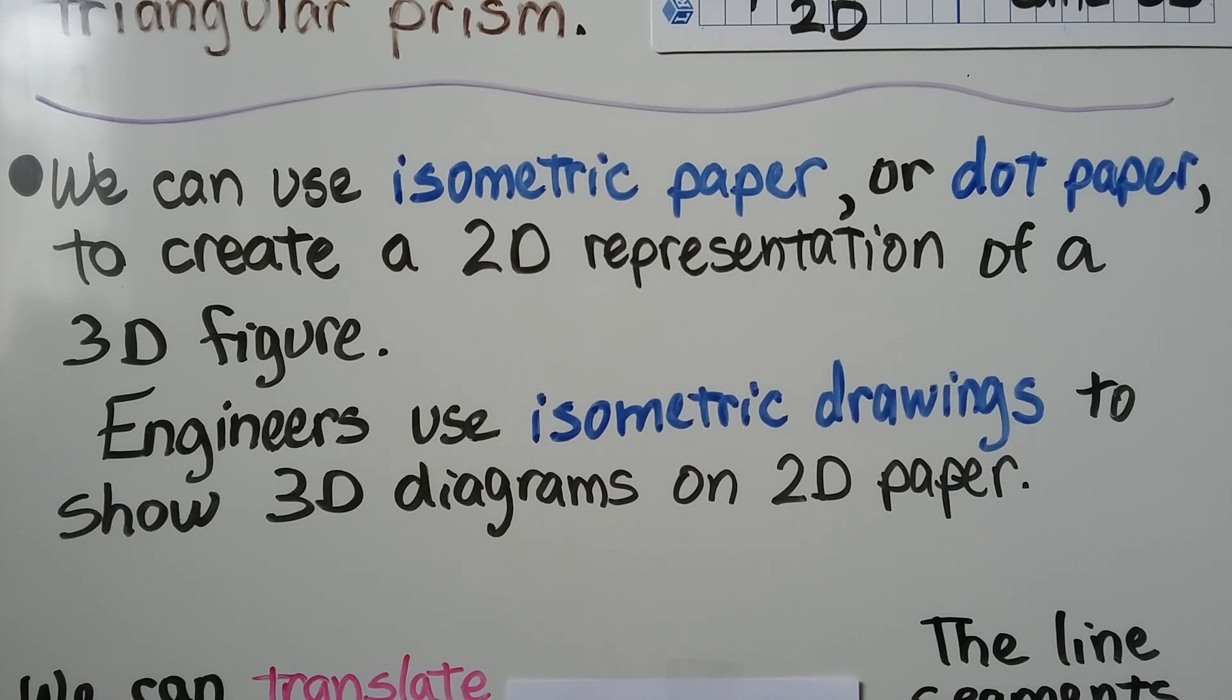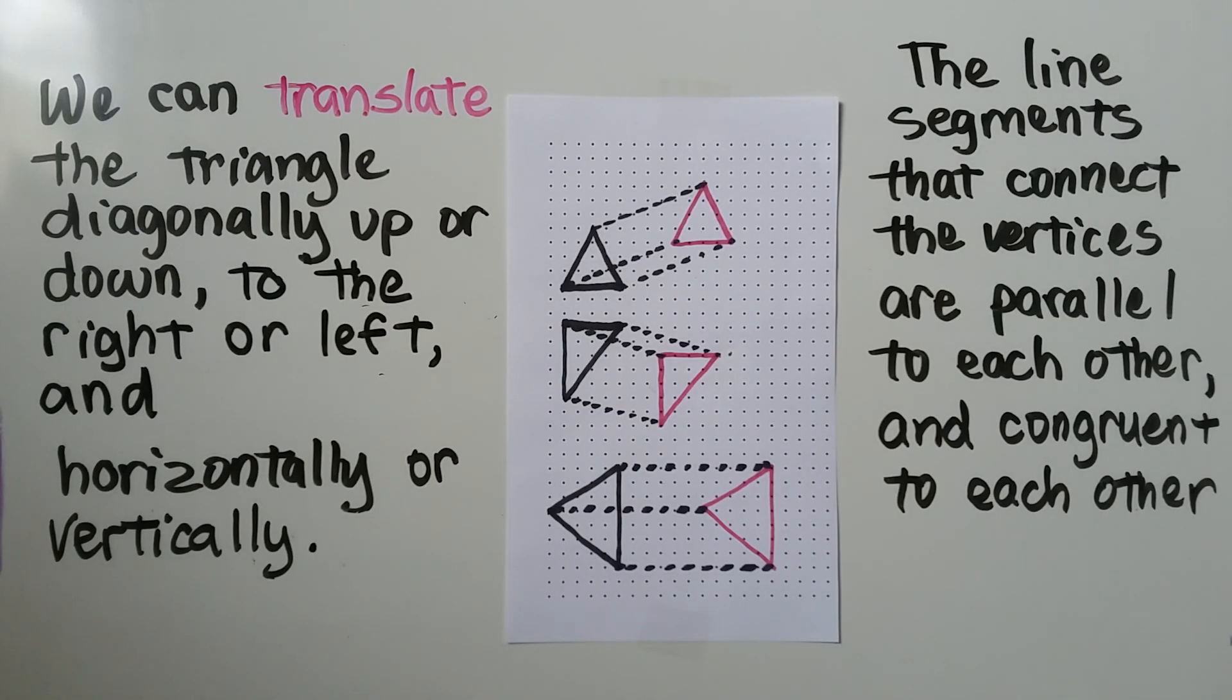We can use isometric paper or dot paper to create a 2D representation of a 3D figure. Engineers use isometric drawings to show 3D diagrams on 2D paper. We can translate the triangle diagonally up or down, or to the right or left, and horizontally or vertically.